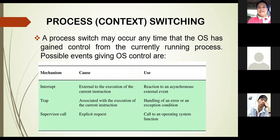Process or context switching: a process switch may occur any time the OS has gained control from the currently running process. Events giving the OS control include interrupts, traps, and supervisor calls. Causes of interrupt: external to the execution of the current instruction (asynchronous external events), associated with the execution of the current instruction (error or exception condition), or explicit request (call to an operating system function). Uses for interrupts: reaction to asynchronous external events, handling of an error or exception condition, and calls to an operating system function.